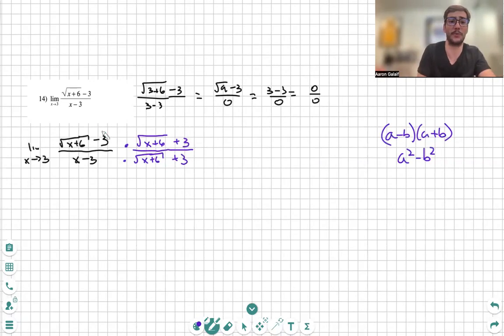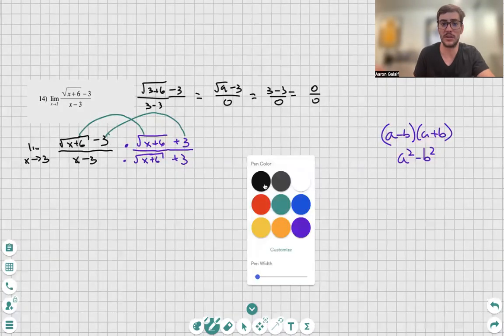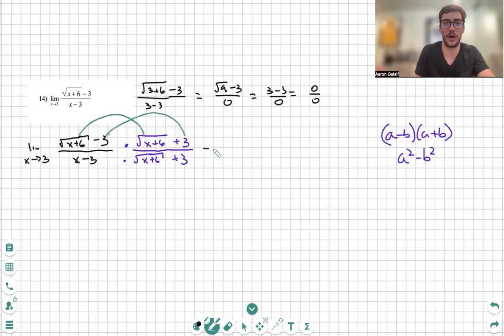So, the first thing I'm going to do is multiply these two, subtracted by the multiplication of these two. We're going to move on and say square root of x plus 6 times square root of x plus 6 is just x plus 6, minus 3 times 3, which is 9. That's it.